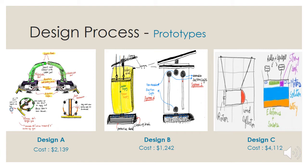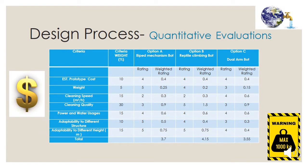The last design prioritizes speed and environmental sustainability, but with a major cost inflation. All three designs are equipped with a sensor to monitor the cleanliness, but the last design is fitted with a costly high-tech sensor to identify the most effective speed at which the window is cleaned. The three designs were tabulated and rated based on cost, weight, cleaning speed and quality, power and water usages, and adaptability to different structures and heights.